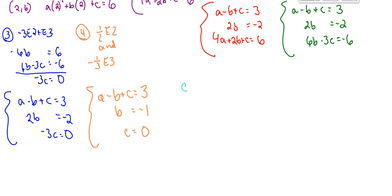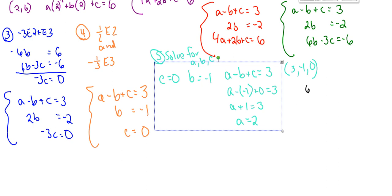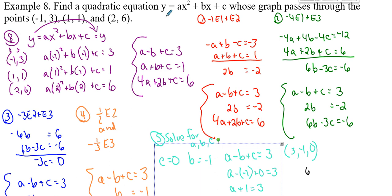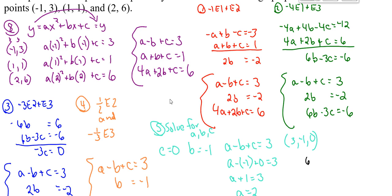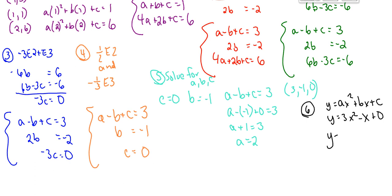So solving for all my variables, I get c is 0, b is negative 1, a is 2. So that's my ordered triple. And I want to remember that really I had this y equals ax squared plus bx plus c that I truly want to find the solution for. And now I can take that general form and replace a, b, and c with what I have. I get y equals 2x squared minus x plus 0, and so I can drop off the 0. I get y equals 2x squared minus x.